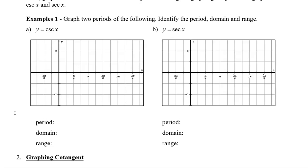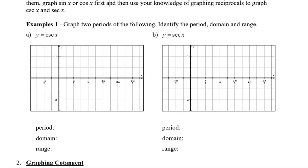Cosecant is the reciprocal of sine. So what we're going to do first is draw a rough graph of sine. I'm going to draw this dotted because it's not the final graph, but it's going to aid us in drawing the cosecant graph. We know that it starts at zero and ends at two pi, with a middle point at pi. We have a max at pi over two and a minimum at three pi over two. I'm going to keep continuing on into the negatives as well.